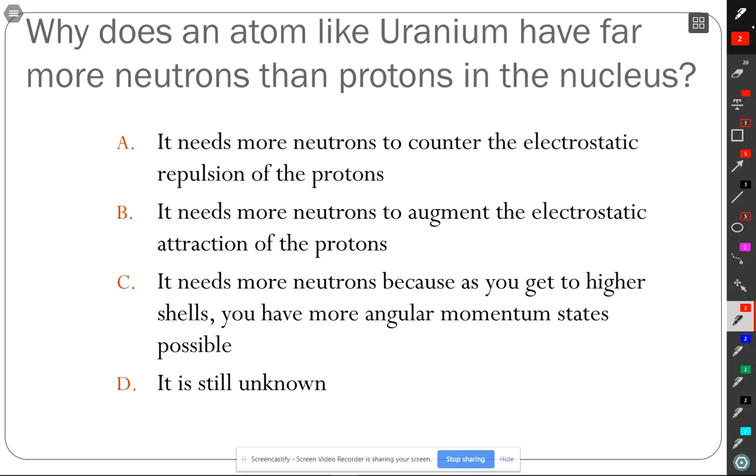For uranium, the dominant isotope has 238 total nucleons. If you have 92 protons and 238 total things in the nucleus, nucleus is just protons and neutrons, so how many neutrons do you have? The easiest way to do this is to realize that 92 is 8 less than 100. So I'll take 238 and subtract it 100 to get 138, and then I'll add that 8 back in to get 146. So we have 146 neutrons and 92 protons. Way more neutrons than protons. So that's where this question comes from. Why does an atom like uranium have far more neutrons than protons than nucleus? So what are your conjectures?